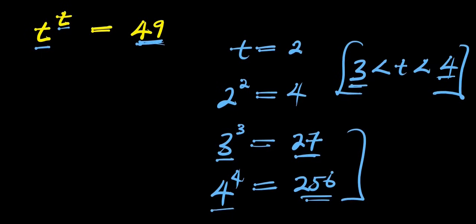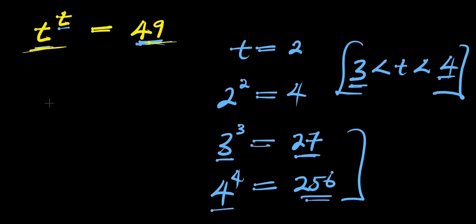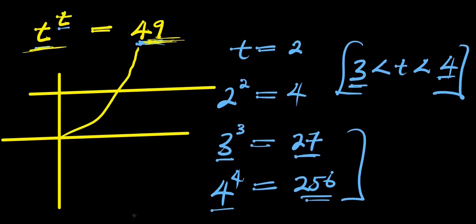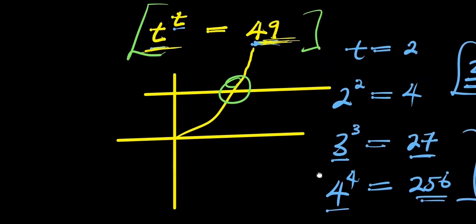If we also consider the graph of this equation: t^t is an exponential function, while 49 is a constant function. The exponential function goes upward, while the constant function stays flat at 49. These two can only intercept at one particular point, which means this equation has exactly one single solution.